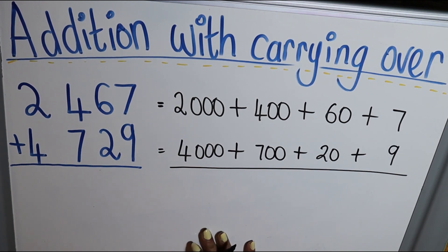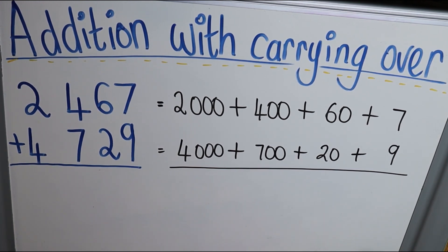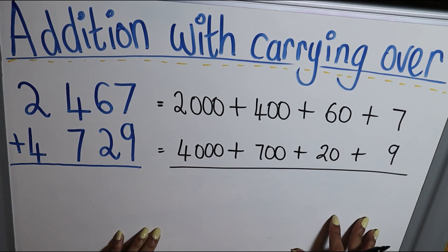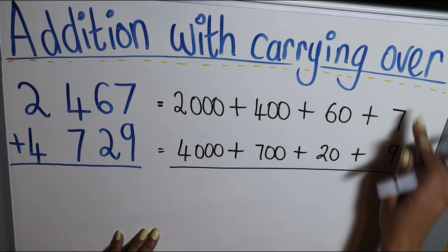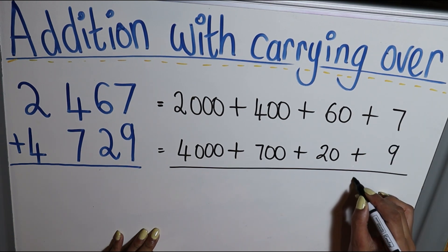When adding, we start from the right, from your units. So 7 plus 9 is equal to 16.